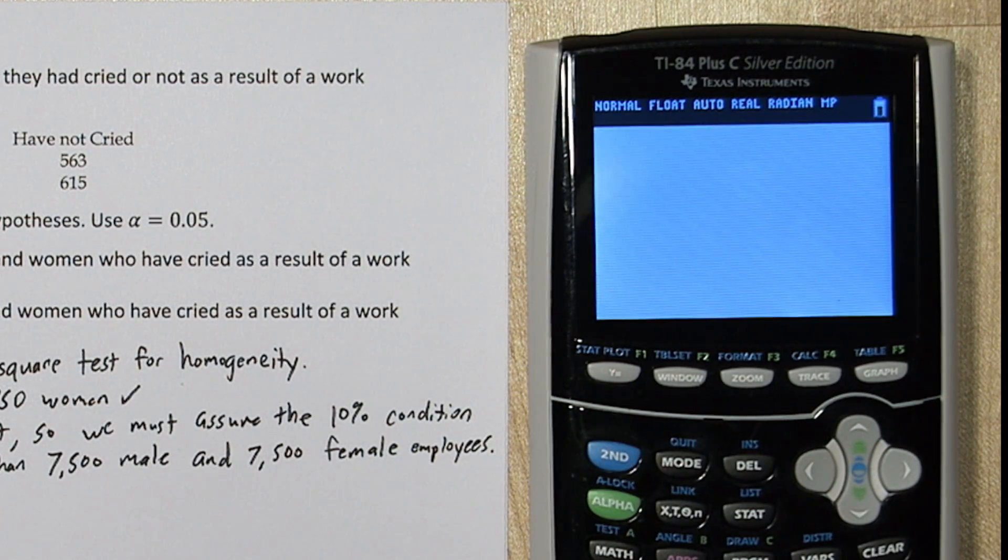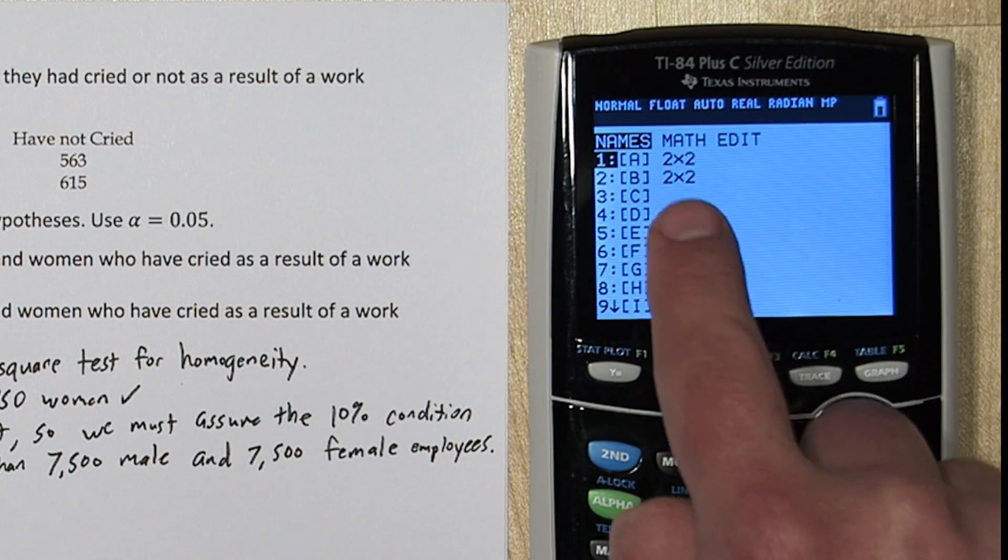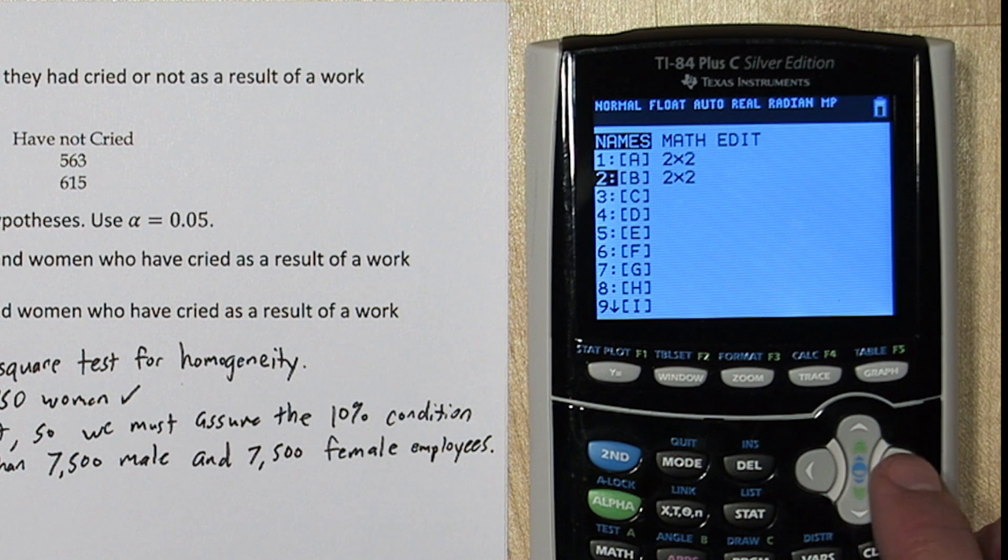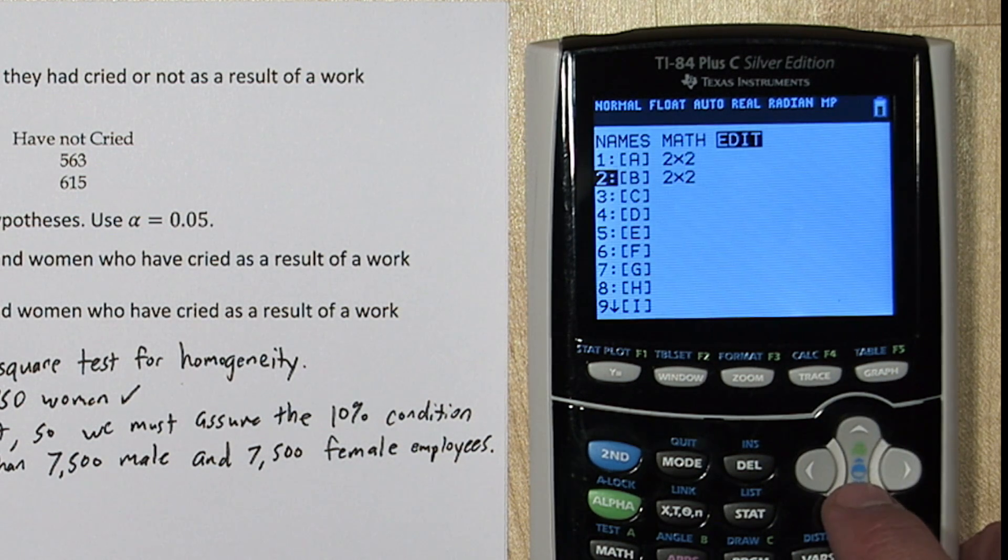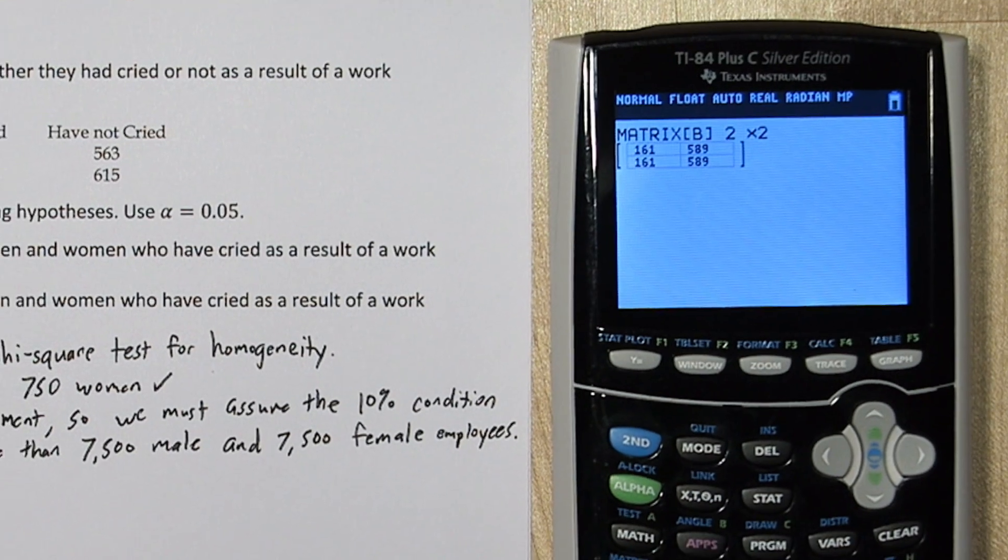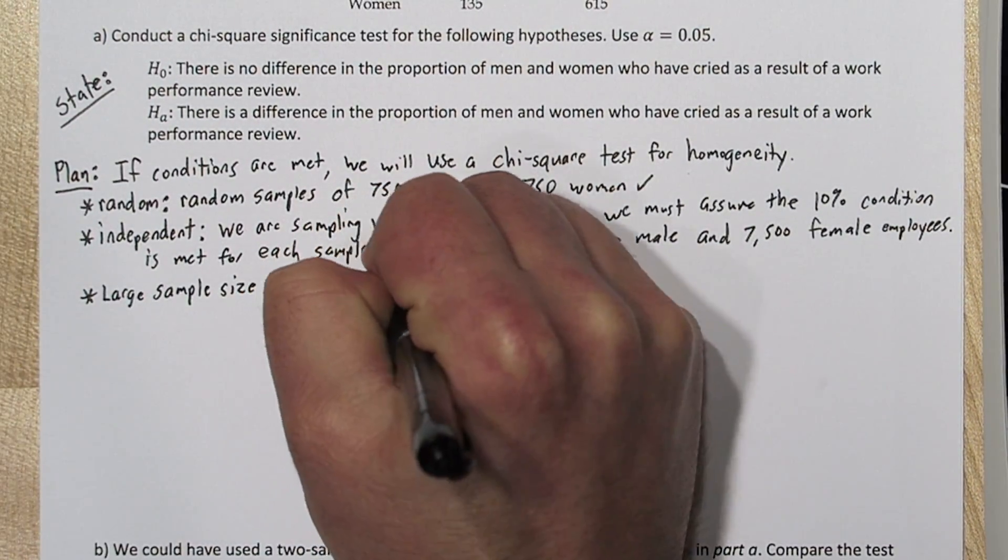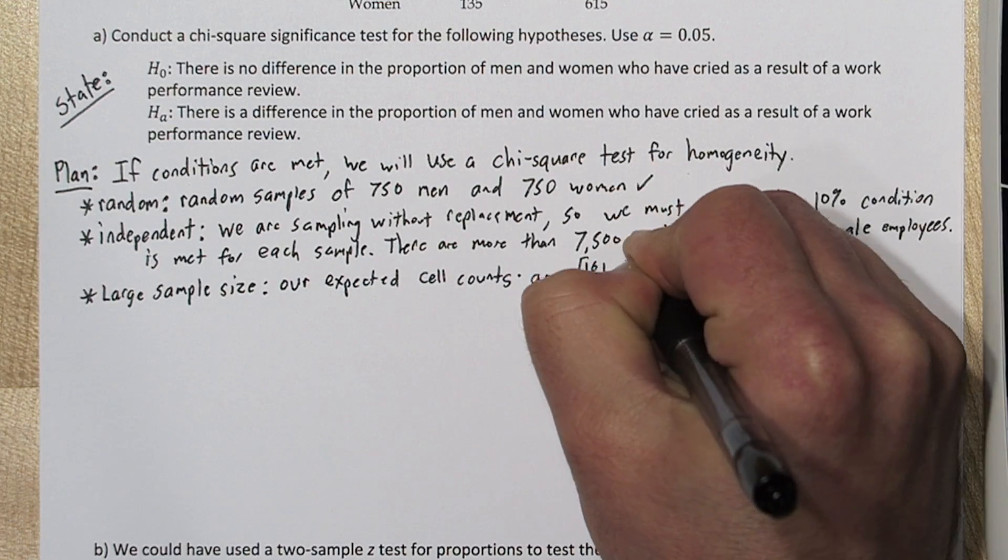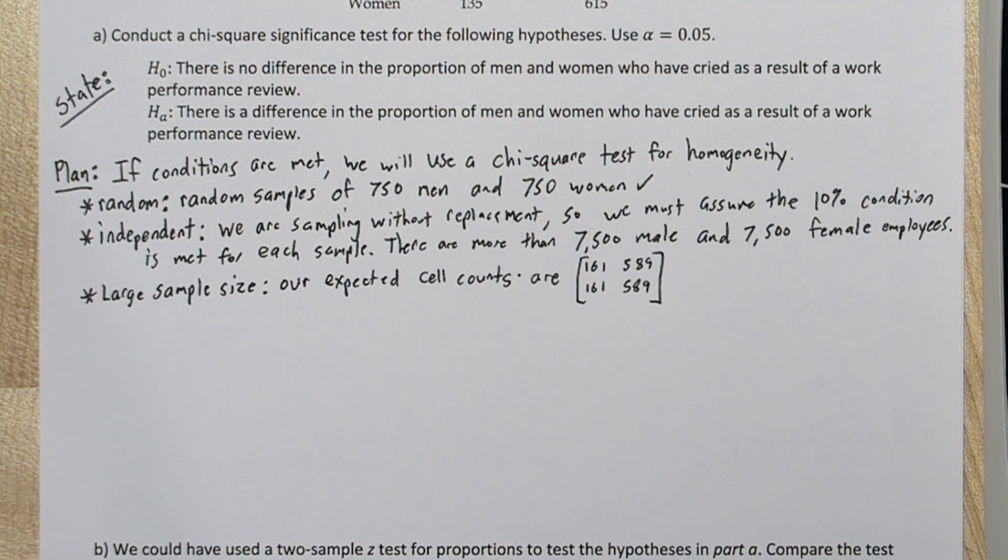Let's go back to our matrix menu. And now you can see matrix B is also a 2 by 2. So if I go to edit and I click on B, here's my expected cell counts. Notice they match.